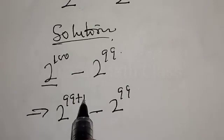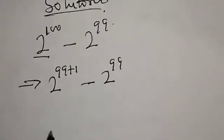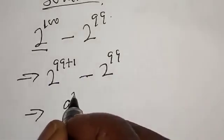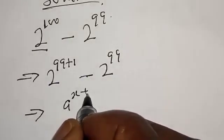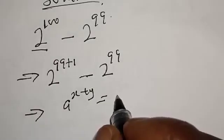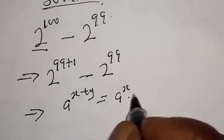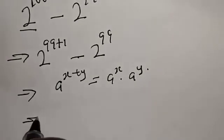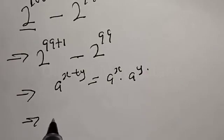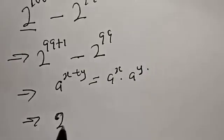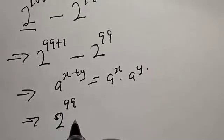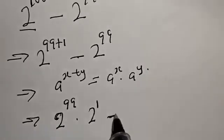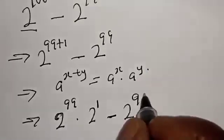We know that 99 plus 1 is equal to 100. Now this implies that if you have a raised to power x plus y, it is equal to a raised to power x multiplied by a raised to power y. This implies that we have 2 raised to power 99 multiplied by 2 raised to power 1, minus 2 raised to power 99.